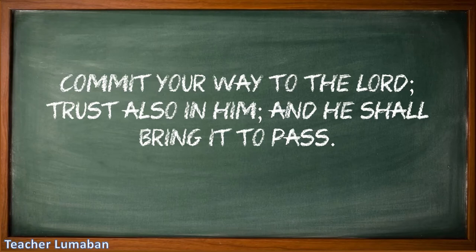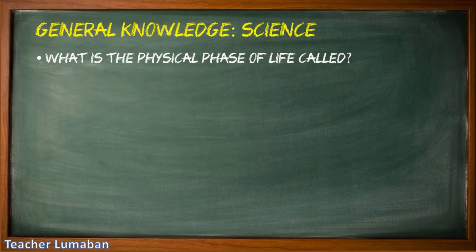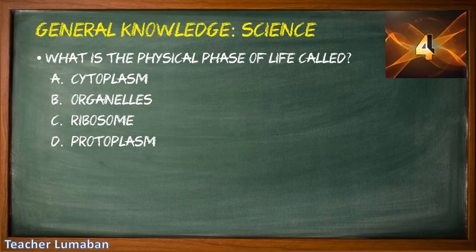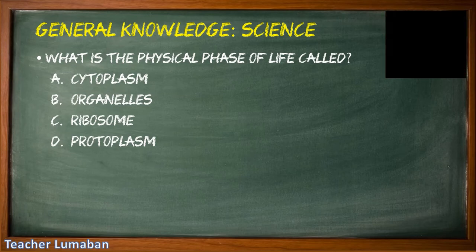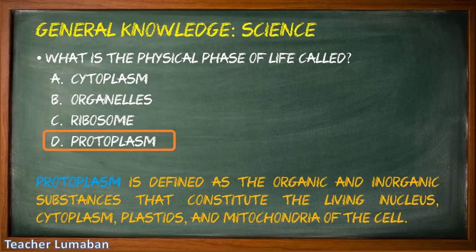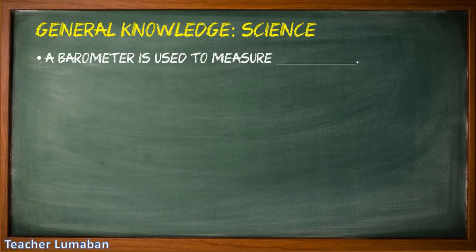Commit your way to the Lord, trust also in him, and he shall bring it to pass. Psalm 37 verse 5. What is the physical phase of life called? Letter A: cytoplasm, Letter B: organelles, Letter C: ribosome, Letter D: protoplasm. The correct answer is Letter D: protoplasm. The physical phase of life is called protoplasm, defined as the organic and inorganic substances that constitute the living nucleus, cytoplasm, plastids, and mitochondria of the cell.